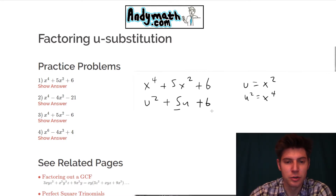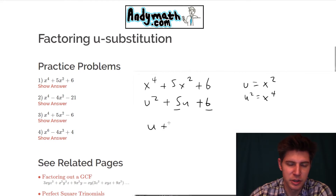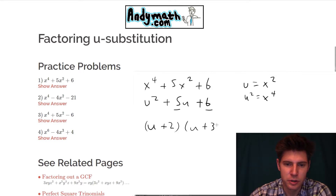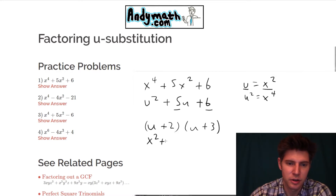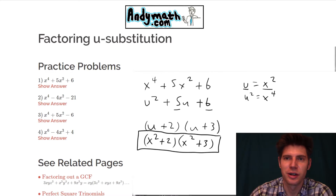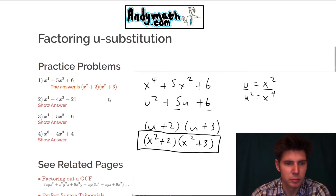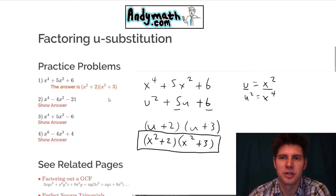So now that we have this rewritten, we just need two numbers that add to 5 and multiply to 6. Well, that's going to be 2 and 3. So we say u plus 2, u plus 3. Now we need to re-plug back in — our u's need to change back into x squareds. So this is x squared plus 2 and x squared plus 3. And that's the answer right there. We can check it: x squared plus 2, x squared plus 3.